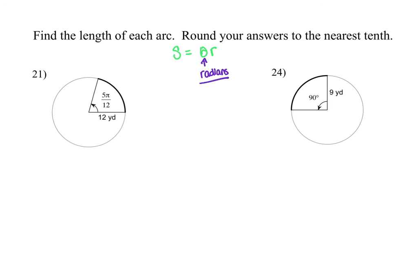This first one is already in radians. We have 5π over 12. So we simply have to take, to find our arc length, we simply have to take our theta, which is 5π over 12, and we are going to multiply it by our radius, which is 12. Those 12s cancel, and you get 5π.